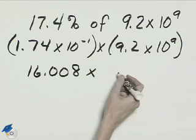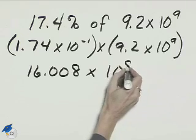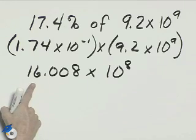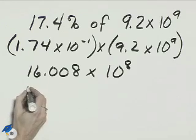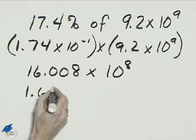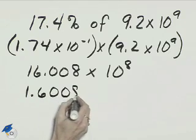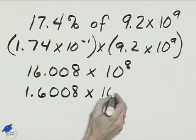Times 10 to the negative 1 times 10 to the 9th is 10 to the 8th. Change 16.008 to scientific notation by moving the decimal once to the left: 1.6008 times 10 to the 9th.